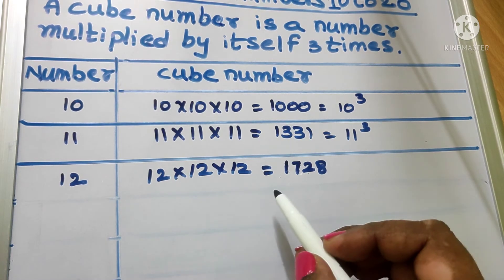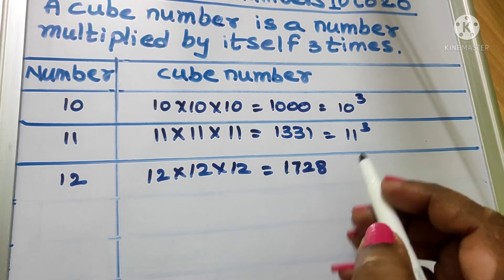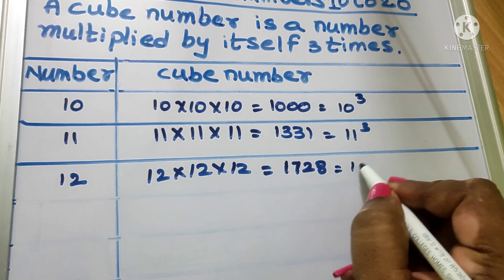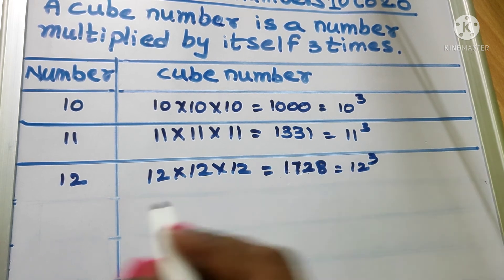12 into 12 into 12 equal to 1728. We write as 12 cube.